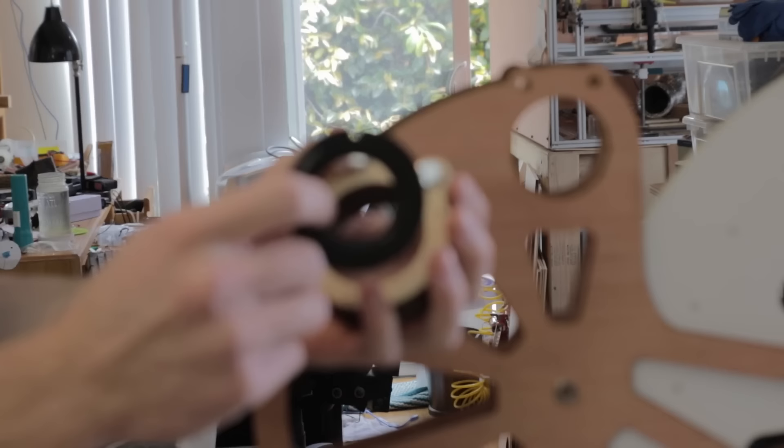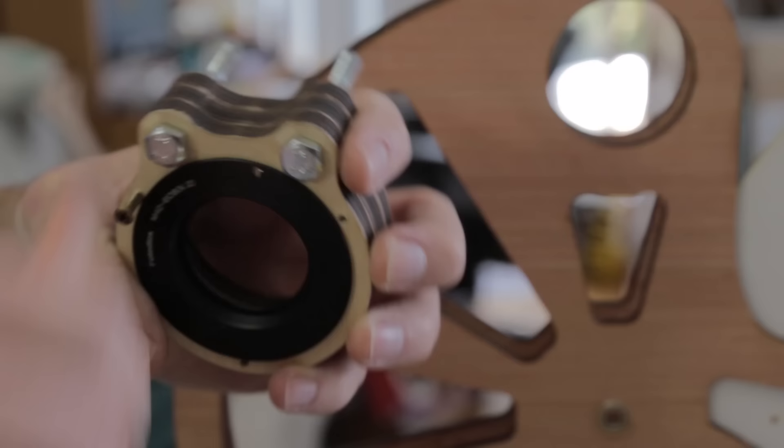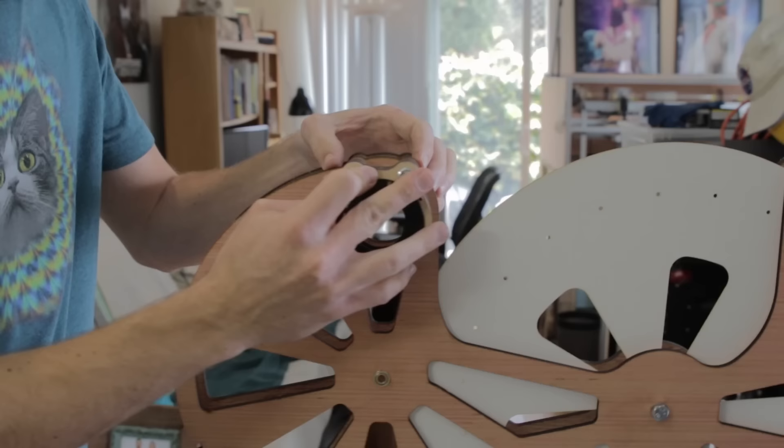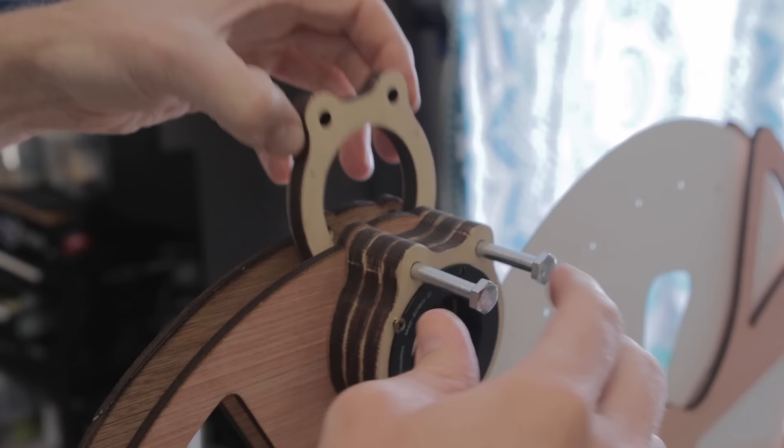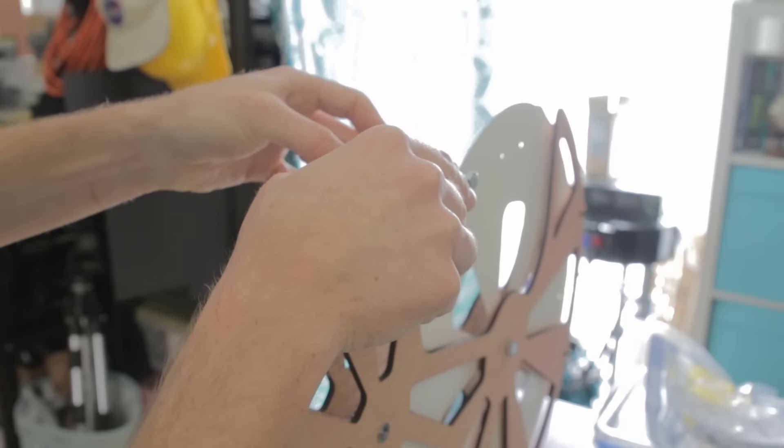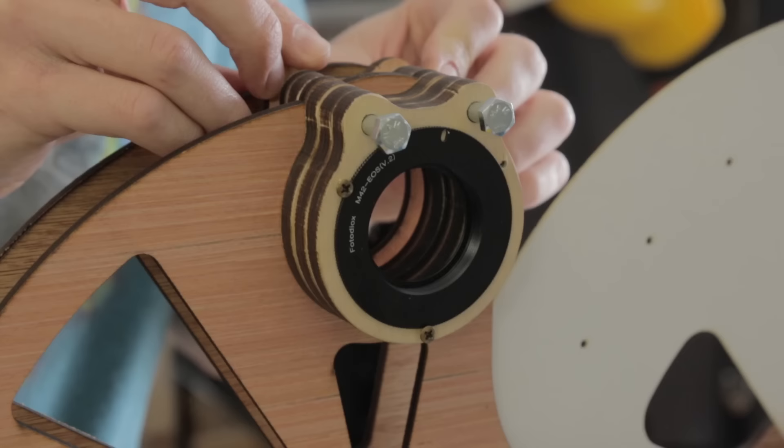So this is how we're going to attach the lens. It's essentially an adapter, M42 to Canon EOS or EF, or whatever the heck that one's called. And then put some screws in it. This is going to go... Two little shims that are the same thickness as the disc. And that is a spacer so that the disc doesn't get stuck between.